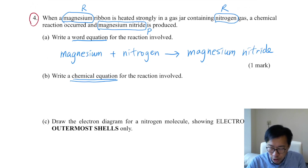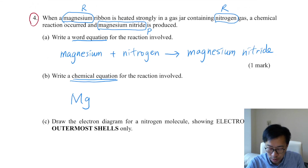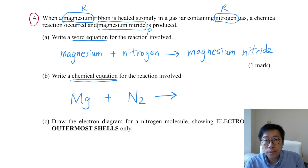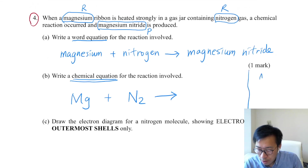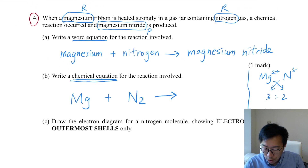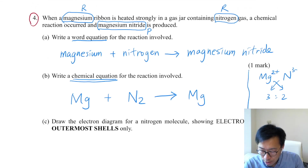Magnesium is a metal, so write Mg. Nitrogen is a covalent non-metal, so write the molecular formula N2. Magnesium nitride is an ionic compound — doing the rough work: Mg2+ together with nitride N3-, giving the ratio 3 to 2. So the formula for magnesium nitride is Mg3N2.